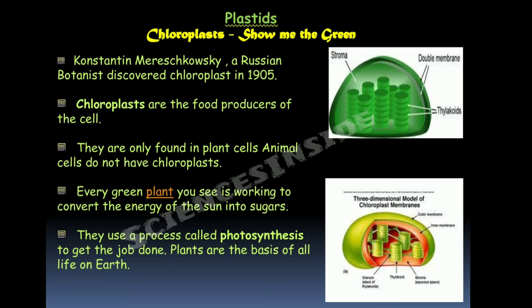Next are plastids — specifically chloroplasts. Russian botanist Konstantin Mereschkowski discovered chloroplasts in 1905. These are the food producers of the cell and are only found in plant cells — that is why plants are green. Animal cells do not contain chloroplasts; every green plant works to convert the energy of the sun into sugars through a process called photosynthesis.